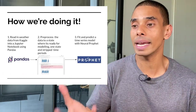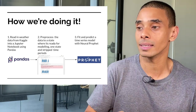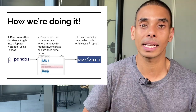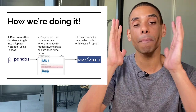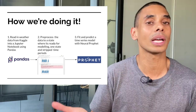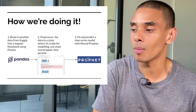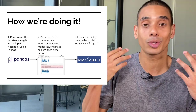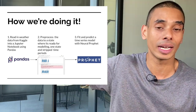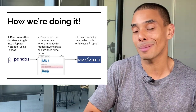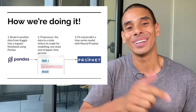So first up, we're going to start out by reading in our dataset into a Jupyter Notebook using pandas. We're then going to do a little bit of pre-processing. Specifically, you'll see that in the data that we're going to be working with, there's a missing segment of data, so we'll take a look at how we can handle that. Then we'll fit our neural network model using Neural Prophet, and then we'll be able to forecast into future periods. Let's get to it.